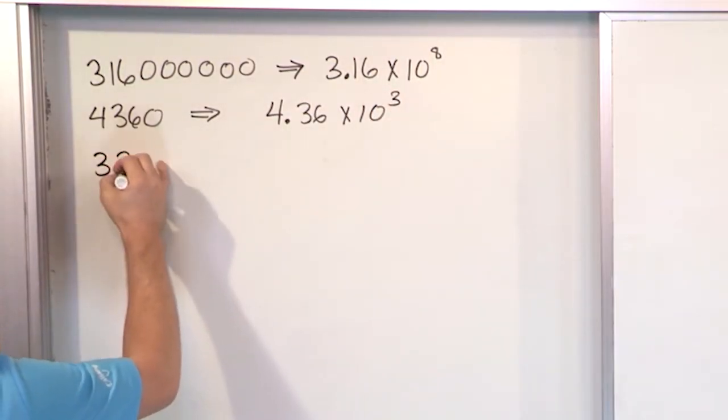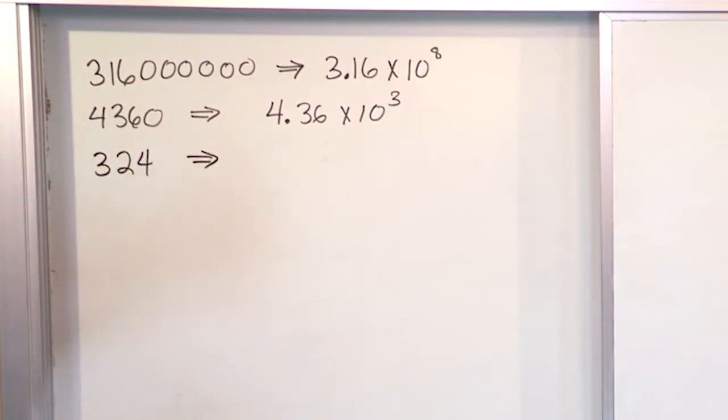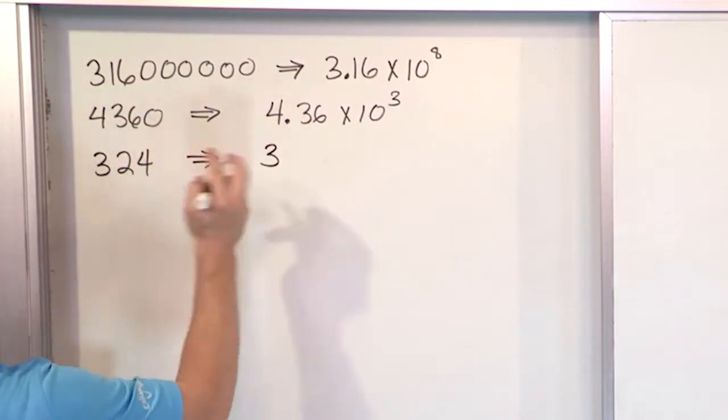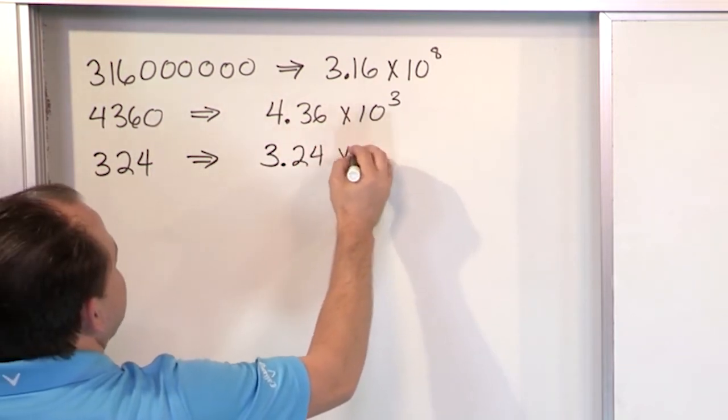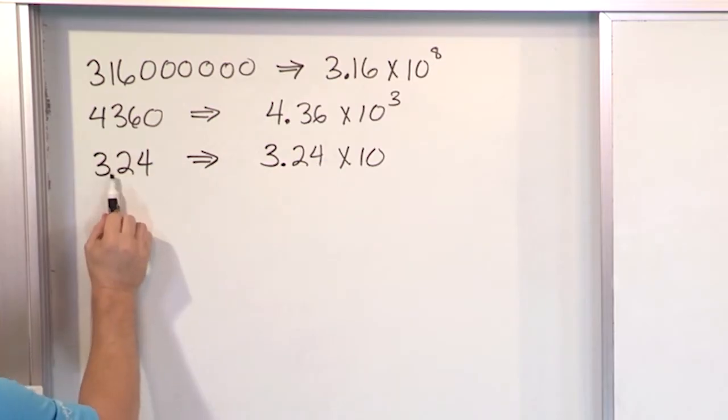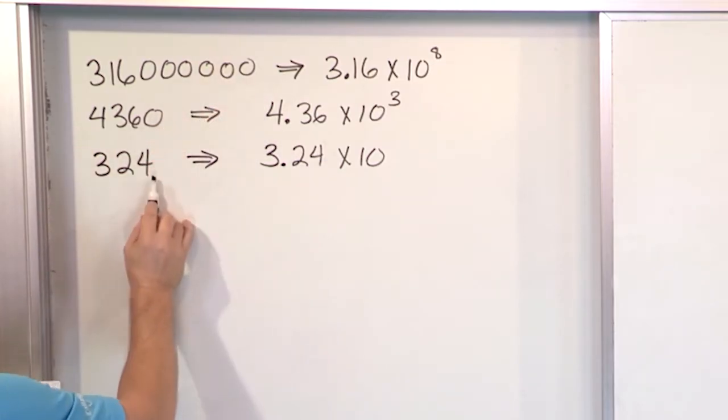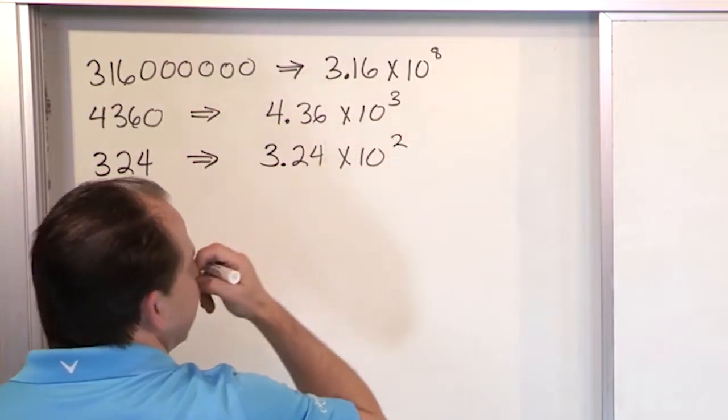What if I wanted to write 324? That number's not too big, so I probably wouldn't write it in scientific notation, but I can. I can just take the first digit, stick a decimal, then the other ones follow, but then I have to multiply times 10. How far do I go? I put the decimal here, then one, two. Because the decimal in all these numbers is after the end here. So it's times 10 to the two.